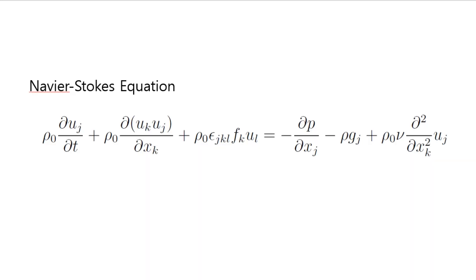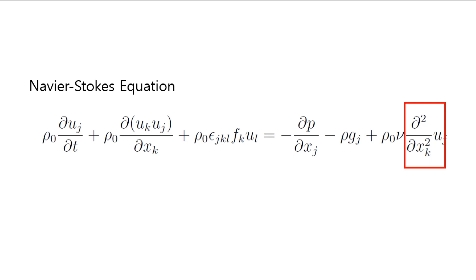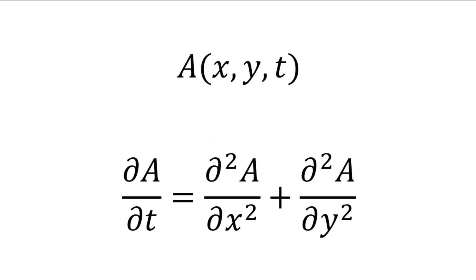Here you can see the Navier-Stokes equation. On the left-hand side, there is a first-order partial derivative of velocity component with respect to time. On the right-hand side, there is a second-order partial derivative of velocity with respect to the spatial coordinates. Let me simplify this equation by erasing all the terms except for these two terms. This is an adjusted and simplified equation of the Navier-Stokes equation.